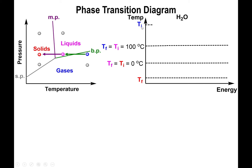Since we're starting with a gas, the initial temperature has to be higher than the boiling point, so we start somewhere above 100°C. Going all the way to a solid means we need a final temperature lower than the melting point, so T_final will be somewhere below 0°C. I've drawn an additional horizontal line for T_final to give a nice reference frame as we expand the graph to the right.